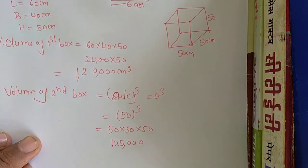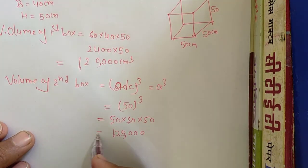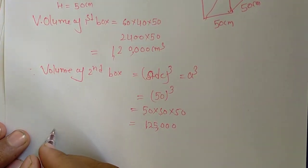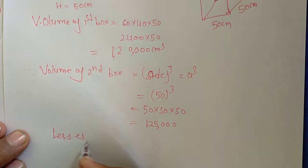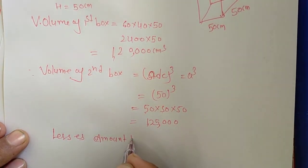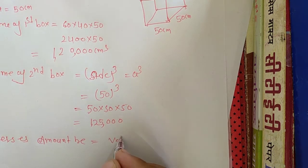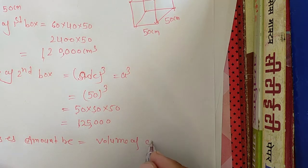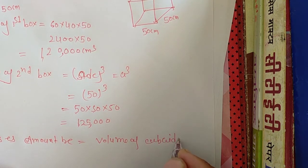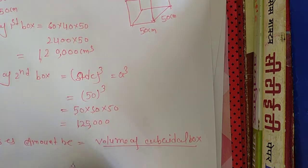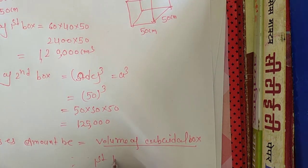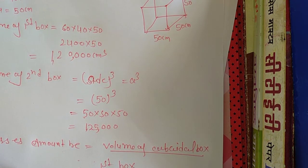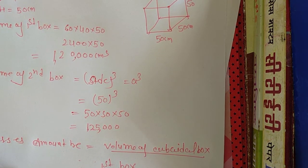1 lakh 20 thousand. So which box amount is lesser? Volume of cuboidal box. Lesser amount would be equal to volume of cuboidal box, which means the answer is first box. First box. Next question, question number 2 in next video. Okay, thanks.